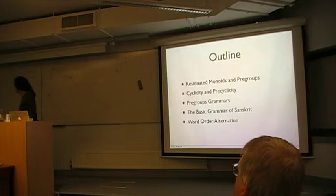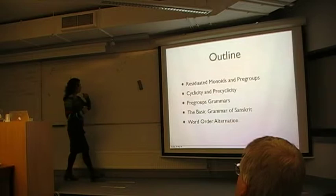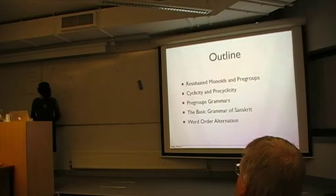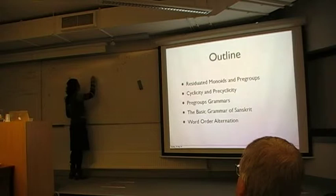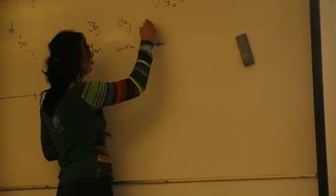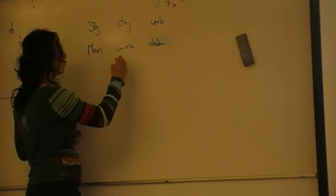I just want to give a small bit of motivation here. So I applied this kind of pregroup arms to reason about grammar of Persian, which is my mother tongue. And then you observe the following type of phenomena there. So if you have a sentence, which has a subject and an object and a verb,